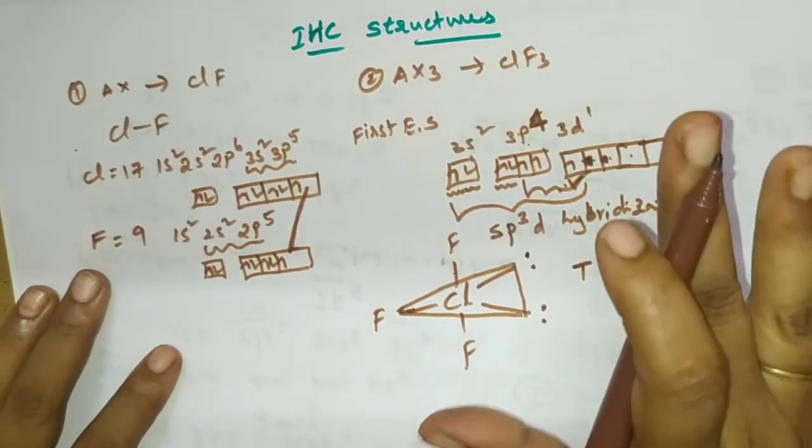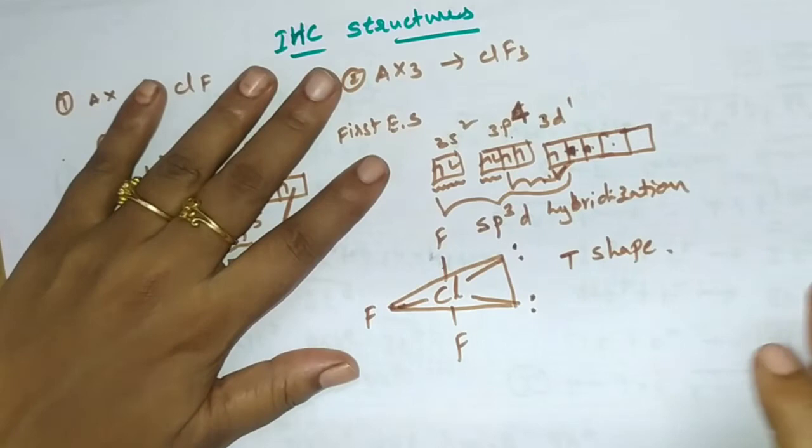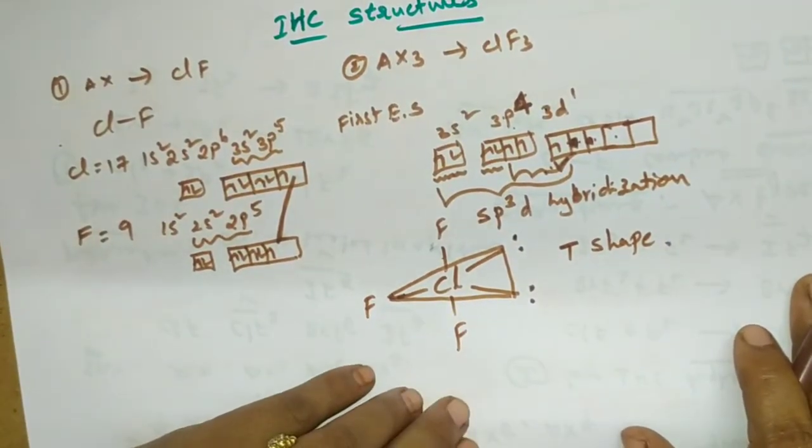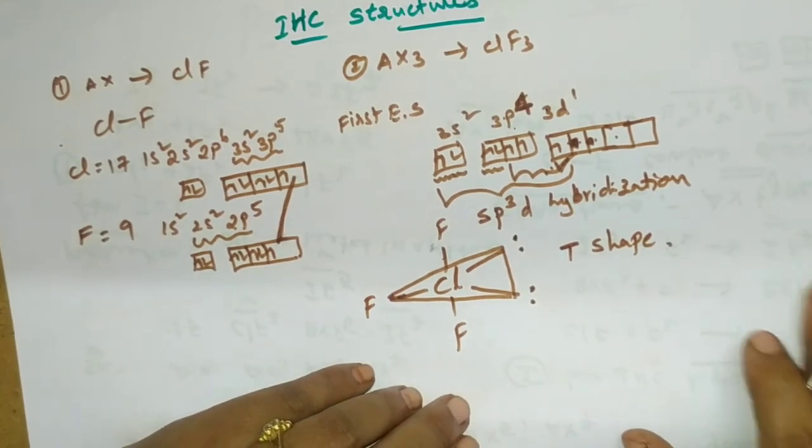See once, it is very very important. This one is no need, but we have to know. So this one is, he is asking about ClF3 structure and electronic configuration in interhalogen compounds.